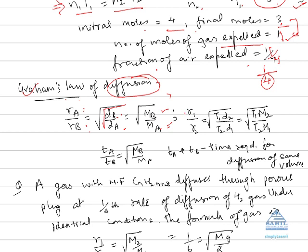Now if we change the conditions like temperature then we can use the formula R1 by R2 is equal to under root of T1 D2 over T2 D1 or which is equal to under root of T1 M2 over T2 M1. Now we can also relate RA and RB like V1 over T1 over V2 over T2 where TA and TB are the time required for diffusion of the same volume of gas. If the volume is same, we can ignore V1 and V2. So TA over TB is equal to under root of MB over MA.